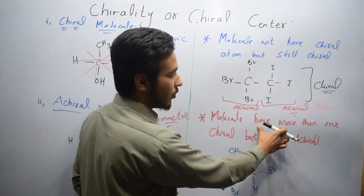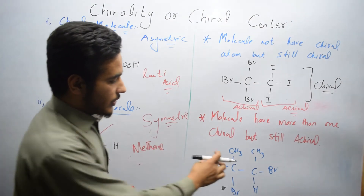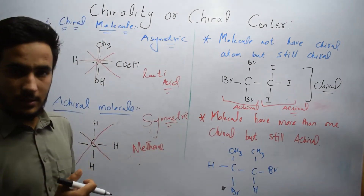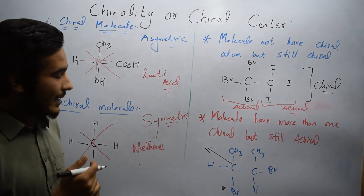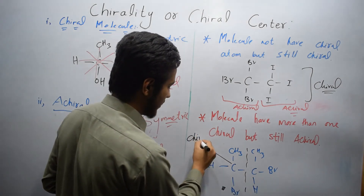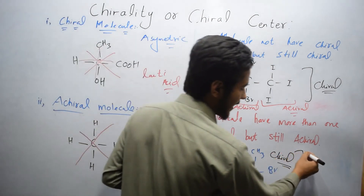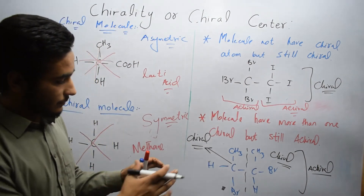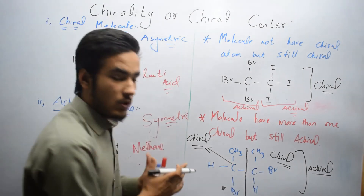The second point is that some molecules have more than one chiral atom but are still achiral overall. For example, consider a molecule where each carbon has CH3, hydrogen, and bromine attached. Each individual carbon is chiral because different atoms are attached, but the whole molecule is achiral because it can be divided into two equal halves.